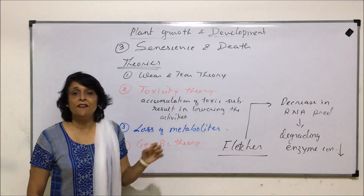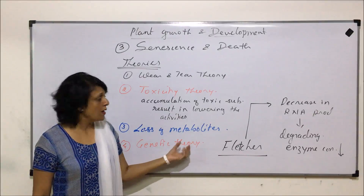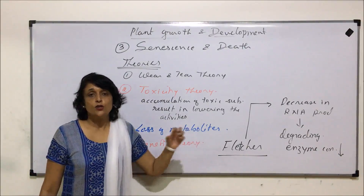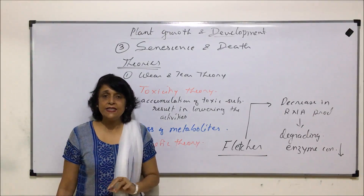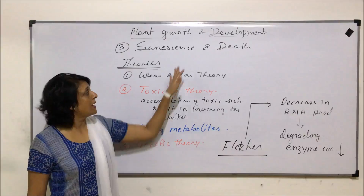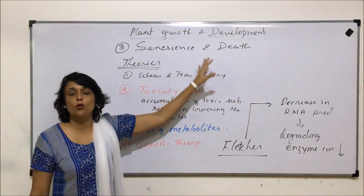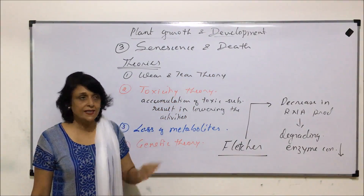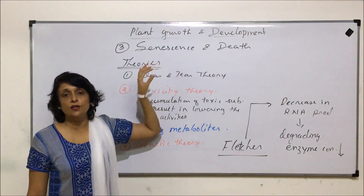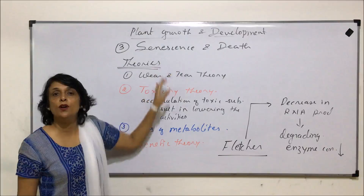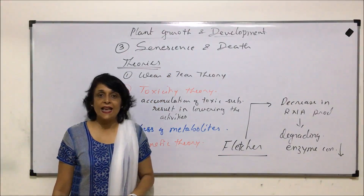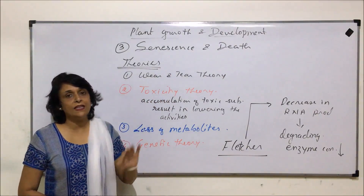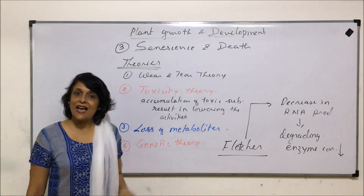We have seen the various types of senescence and the theories which explain it. With these three phases, plants complete their life cycle — the growth and development of the plant is completed in three phases: first was germination, second was reproduction, and this is the third phase, which is senescence and death. This is the last stage after which the plant dies.